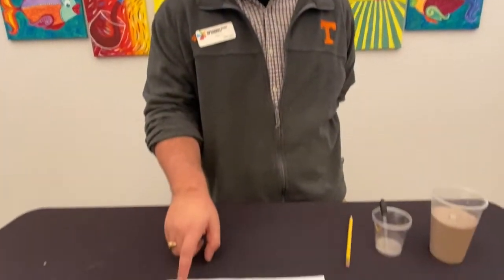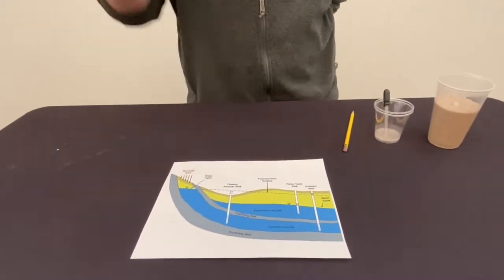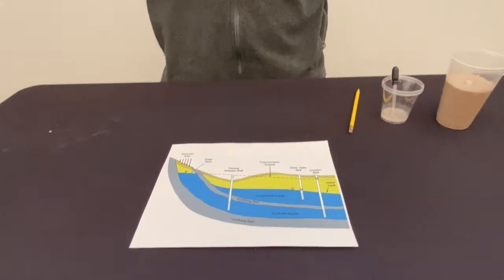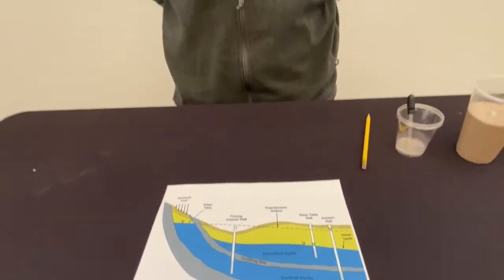You can see the rate of recharge, or the recharge area, here on this diagram. This often occurs because these aquifers naturally recharge from precipitation or mountain runoff. There are several sources from which an aquifer can be recharged.